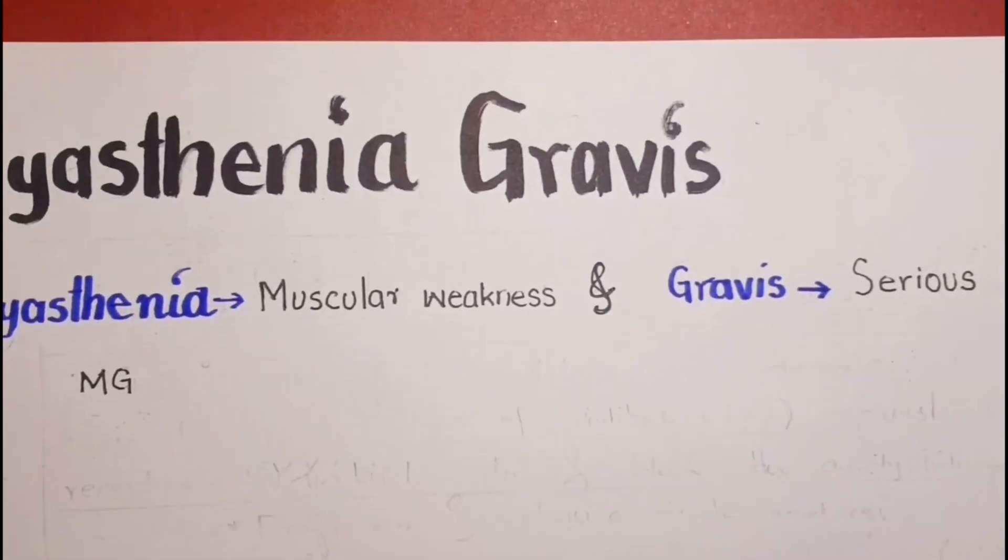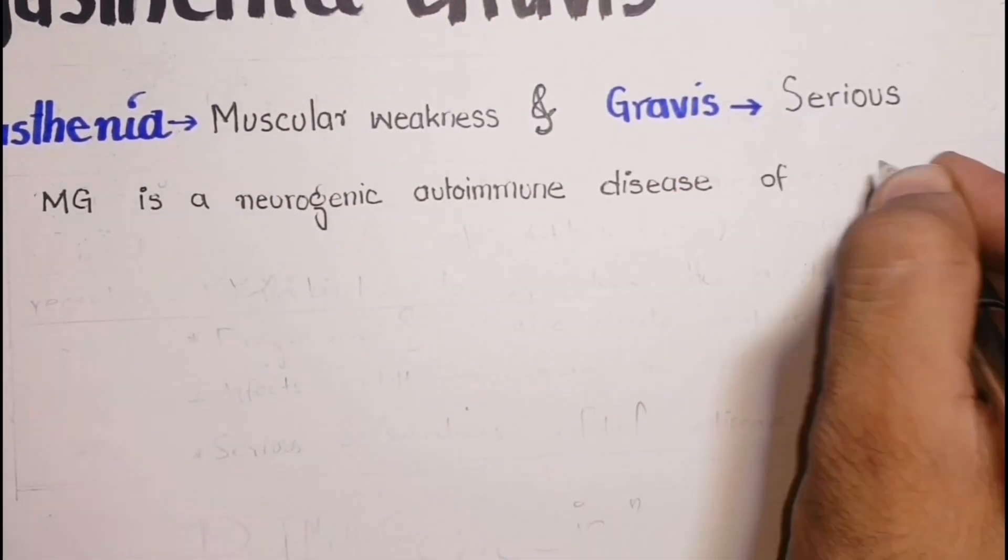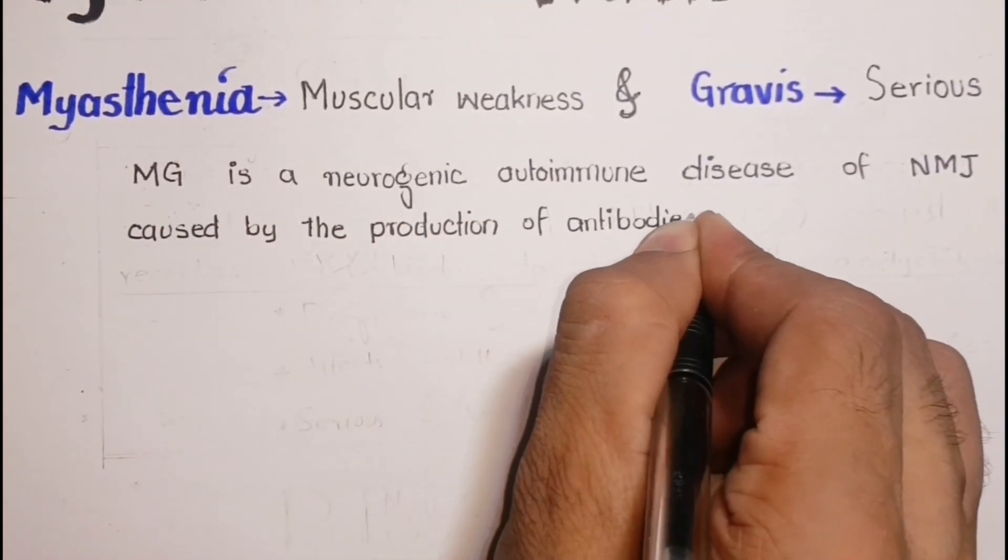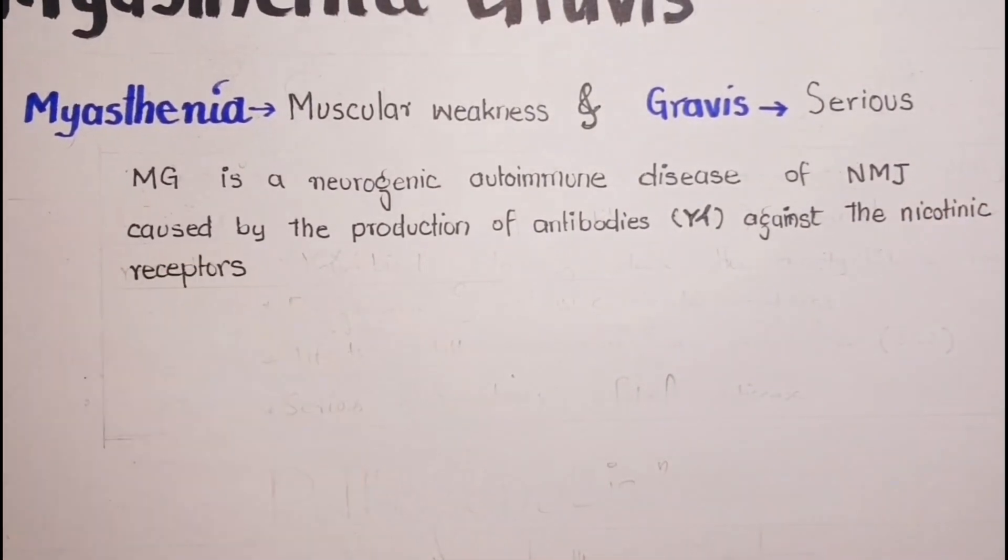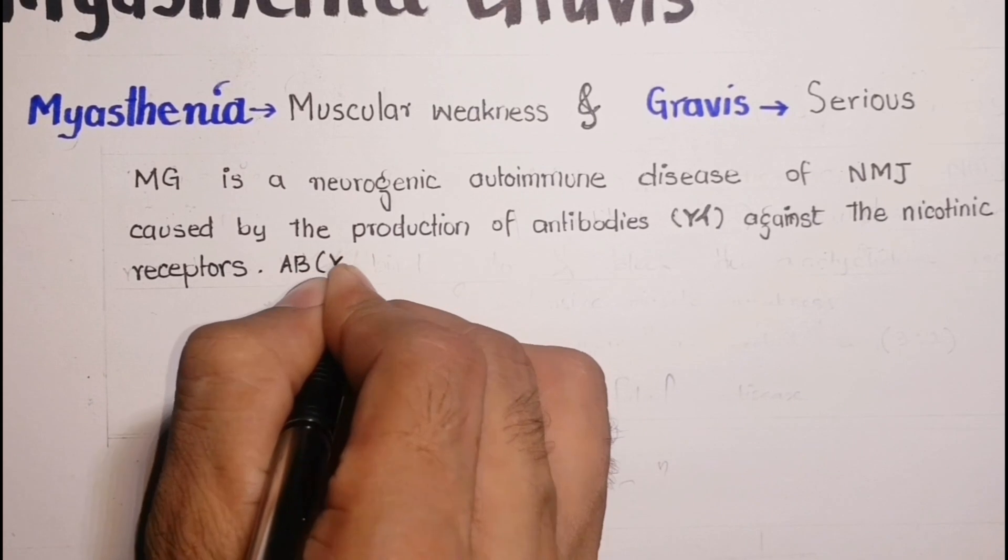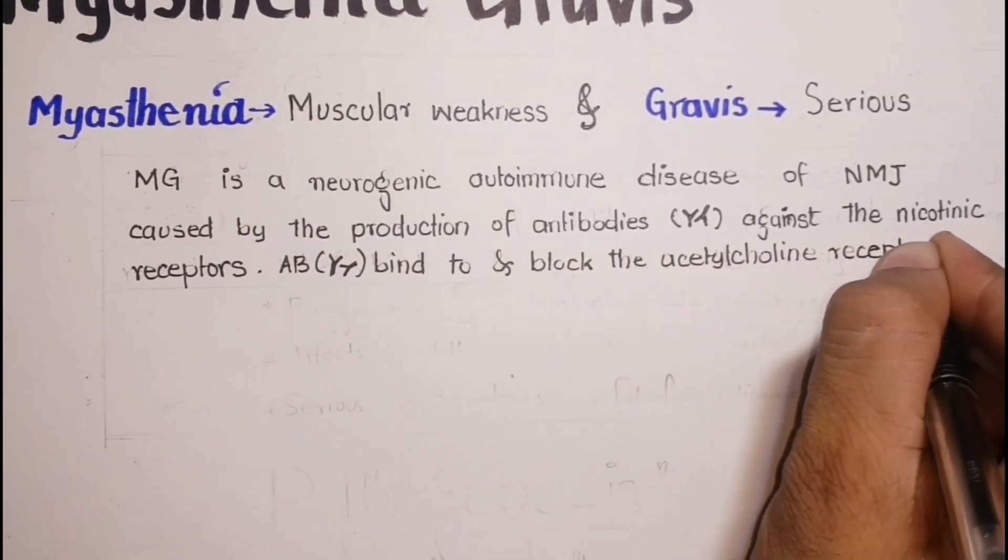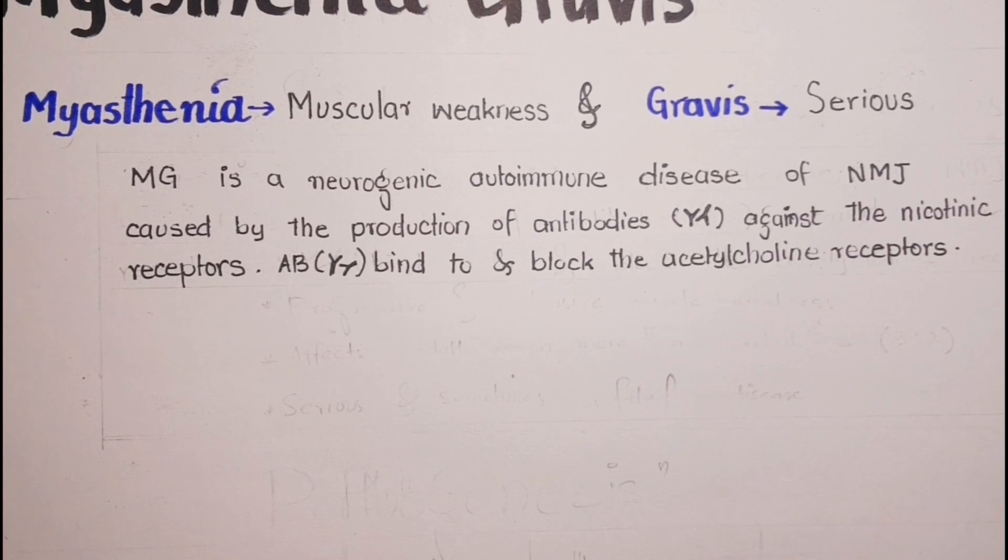Myasthenia gravis is a neurogenic autoimmune disease of neuromuscular junction caused by the production of antibodies against the nicotinic acetylcholine receptors. These antibodies bind to and block the acetylcholine receptors and thus the neurotransmission from the presynaptic nerve terminal to the muscle fibers diminishes.